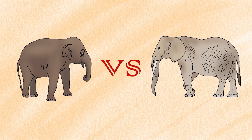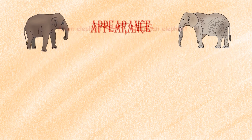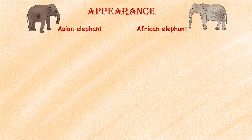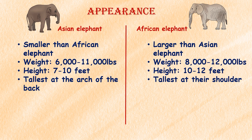Appearance: African elephants are larger and heavier than Asian elephants. African elephants are 10 to 12 feet tall and weigh 8,000 to 12,000 pounds, while Asian elephants are 7 to 10 feet tall and weigh 6,000 to 11,000 pounds.